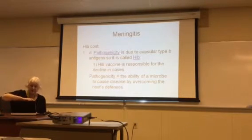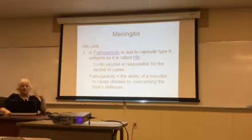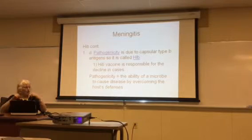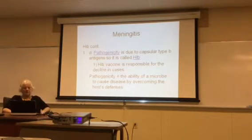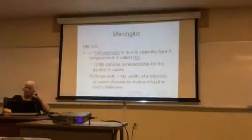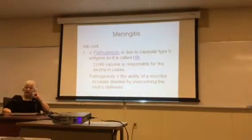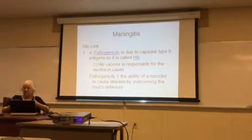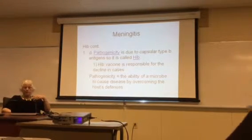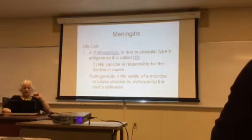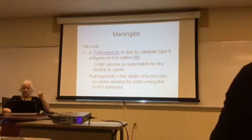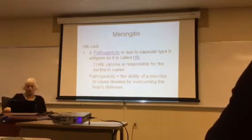The pathogenicity — the ability of that microbe to cause disease by overcoming your defenses — is due to its capsule, which is a capsular type B antigen. That's why it's called Hib: Haemophilus influenzae type B. They have developed a vaccine called the Hib vaccine, and that is responsible for the decrease in cases of this type of meningitis.